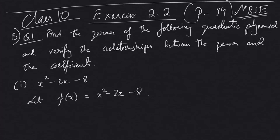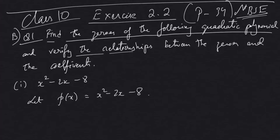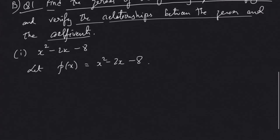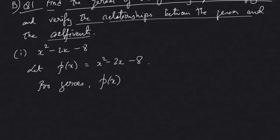Question number one states: find the zeros of the following quadratic polynomials and verify the relationship between the zeros and the coefficients. Our first job is to find the zeros, and then verify the two relationships we just studied. The polynomial in the variable x is x² - 2x - 8.